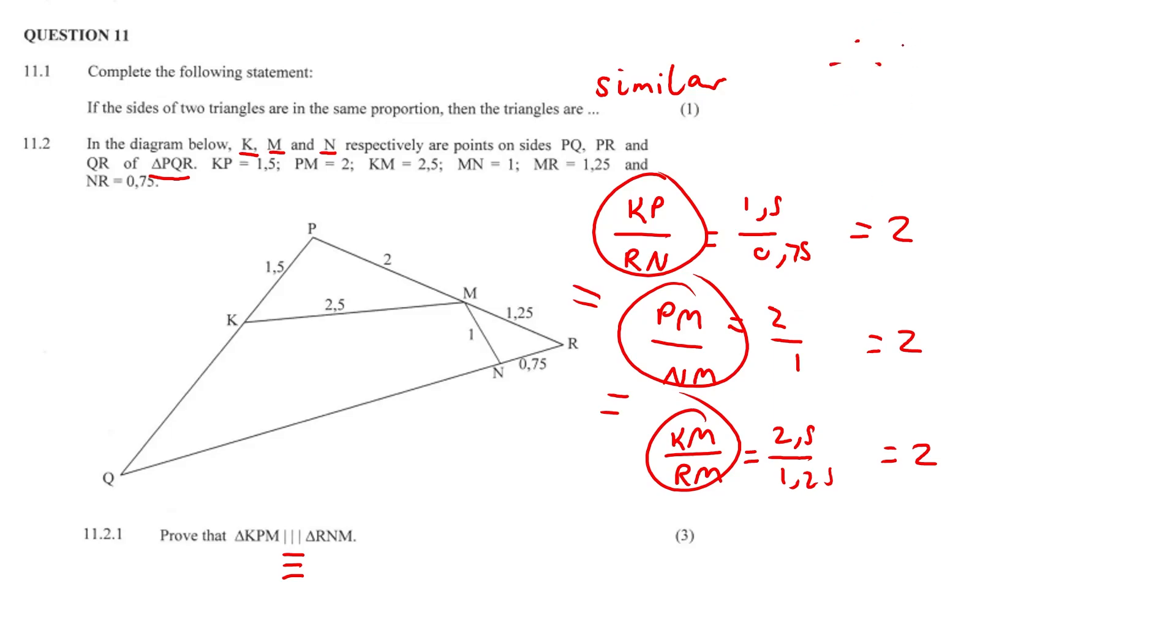Therefore, triangle KPM is similar to triangle RNM. Oh, I might run out of space here. Triangle KPM is similar to triangle RNM. And that's it for 11.2.1.